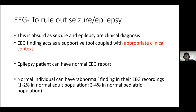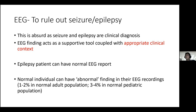Normal individuals can have abnormal findings in their EEG recording. For example, patients with a family history of genetic generalized epilepsy — when you do photic stimulation, they can have a self-limited photoparoxysmal response, which is considered a familial trait for IGA, but the patient themselves doesn't have epilepsy or seizure.